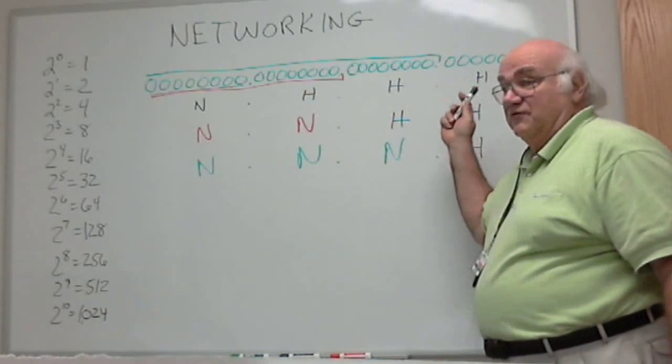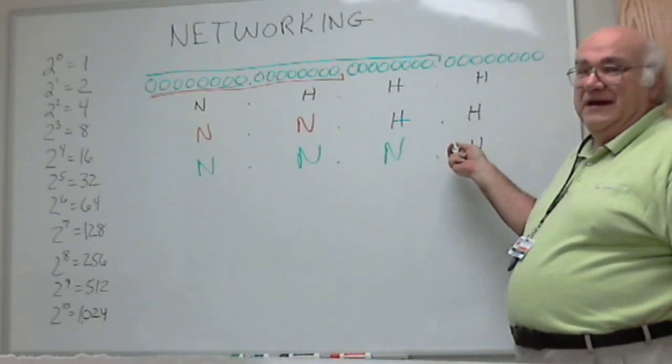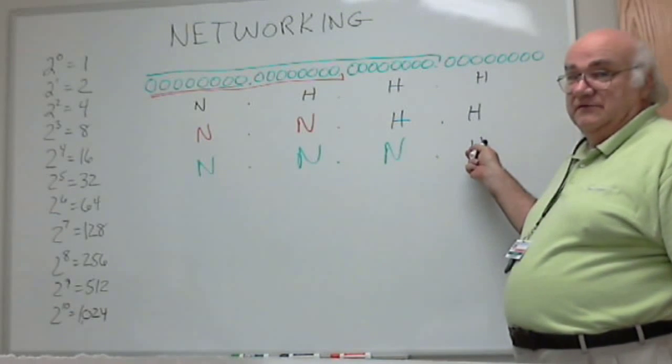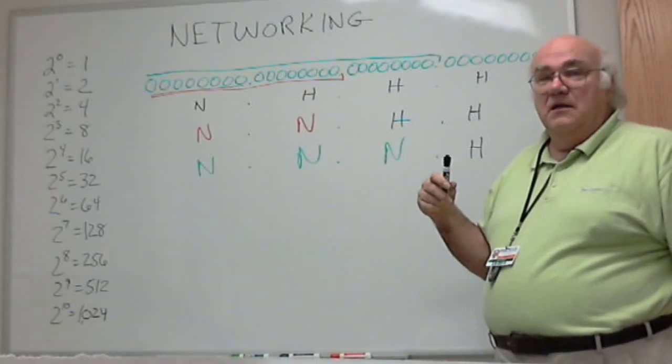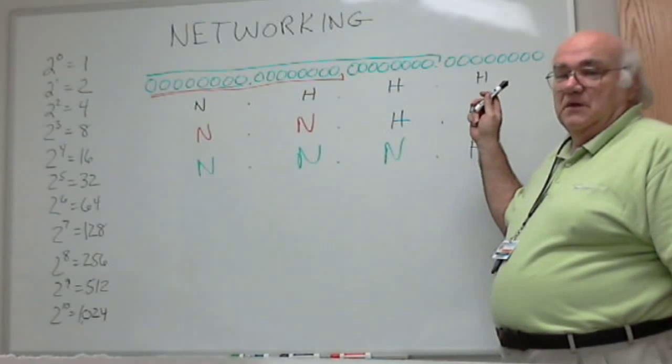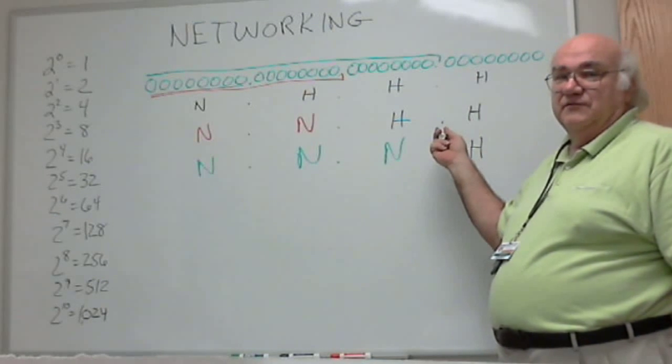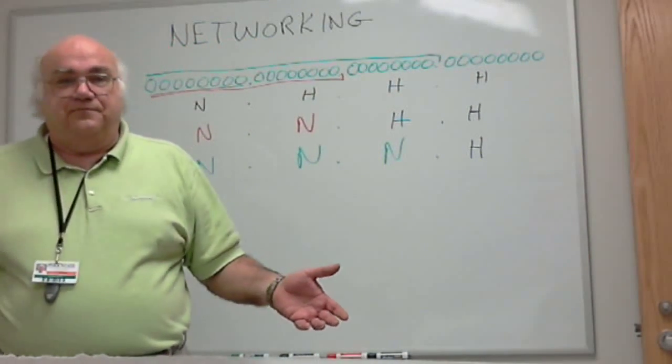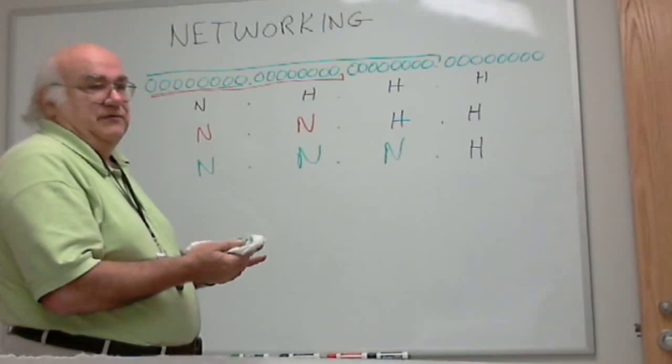So this was the classful structure. Remember we said that if I had 300 addresses I needed, I couldn't use this. I had to come up to a class B address with 2 bytes, 64,000 different addresses, 64,000 host addresses. I needed 300. Complete waste. So we've got to come up with some better way of doing this.